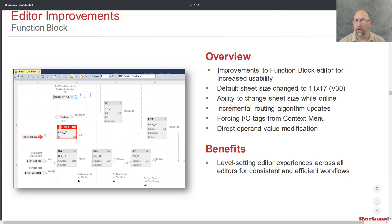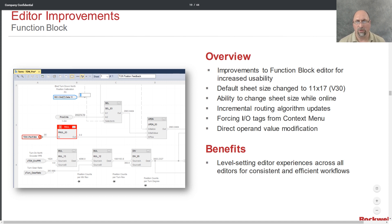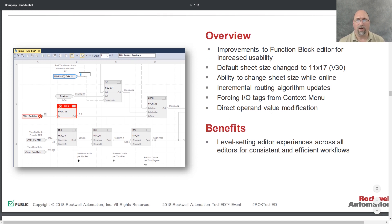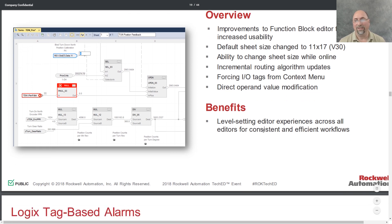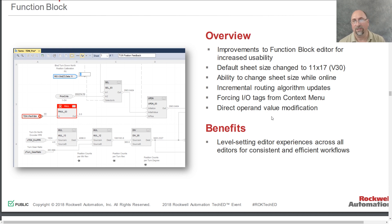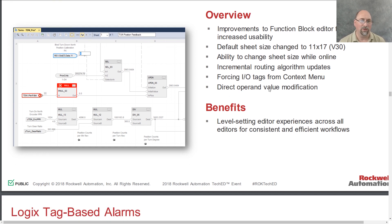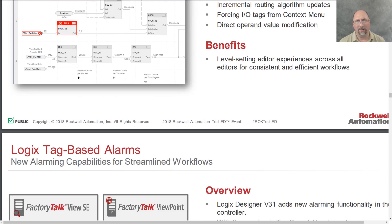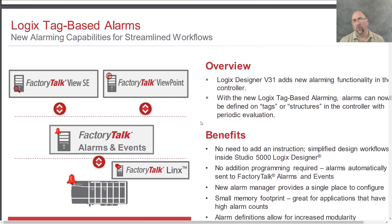There's also the ability to change the sheet size while online, incremental routing algorithm updates, forcing I/O tags from the context menu - that's huge - and direct operand value modification - also huge. These are just things that are frustrating because you think they should work and they don't. Now that they've put those in, that's pretty significant. And the look is just cleaner and more modern - it was getting kind of dated. The new logic tag-based alarms are something new, and I believe that's in version 31.